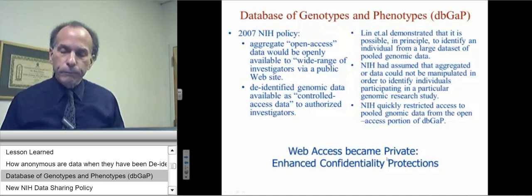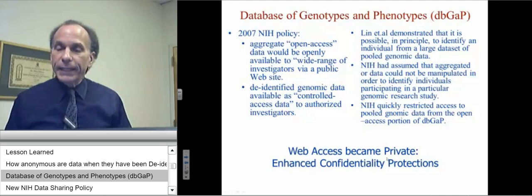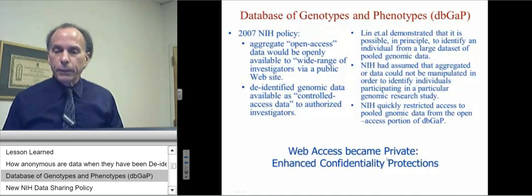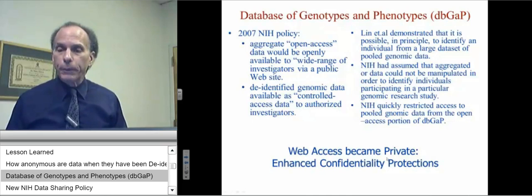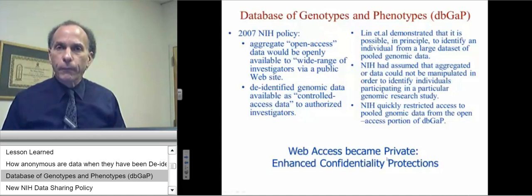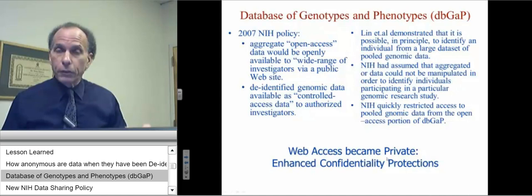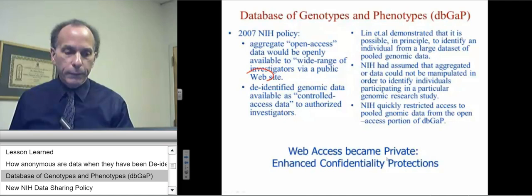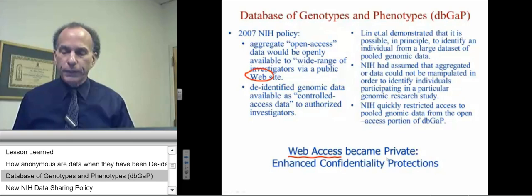Their 2007 policy was to create two types of database: one would be an aggregate open-access database openly available to a wide range of investigators via a public website, and they would also keep de-identified genomic data available as controlled-access data to authorized investigators. However, at about that time, investigators demonstrated that it is possible in principle to identify an individual from a large data set of pooled genomic data. The NIH had assumed aggregated data could not be manipulated to identify individuals, but they quickly restricted access to the pooled genomic data from the open-access portion of the database, and enhanced confidentiality protections for the controlled-access database.